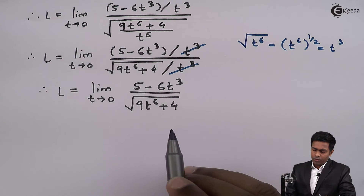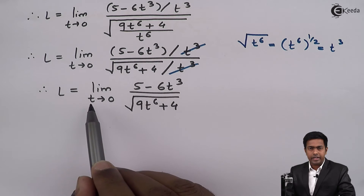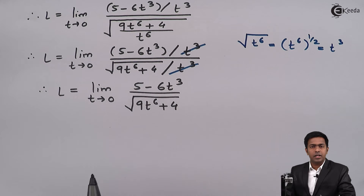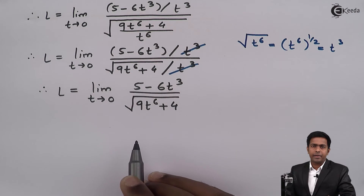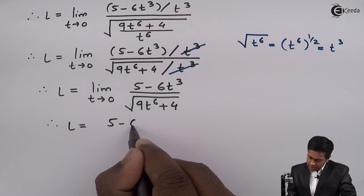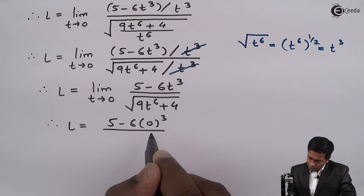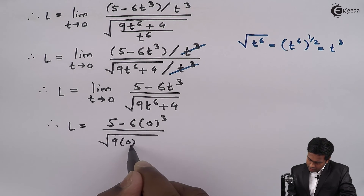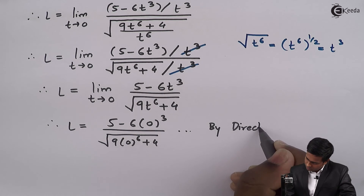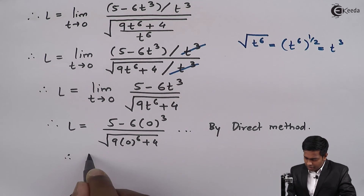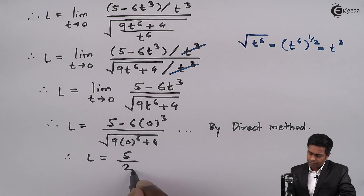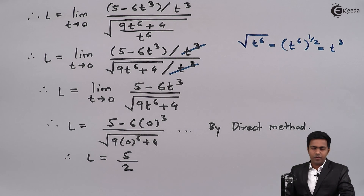Now, since we have limit t tends to 0 and an algebraic function, we apply the direct method — simply substituting t equals 0. This gives 5 minus 6 times 0 cubed in the numerator, which is 5, and the square root of 9 times 0 raised to 6 plus 4, which is the square root of 4, equal to 2 in the denominator. Hence the value of the limit is 5 upon 2.